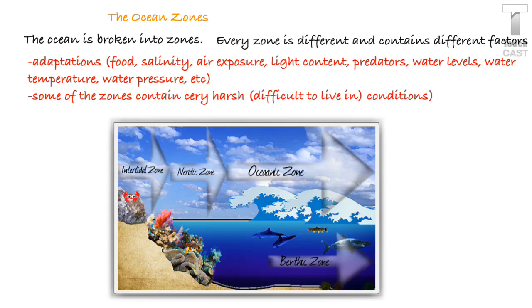Alright guys, so let's get down to business, because like I said, we've got a lot to write. We're going to start out talking about the ocean zones. The ocean is broken down into different zones, and each zone has its own different temperatures, its own different factors, its own different animals. Keep in mind these adaptations — some of these zones contain very harsh conditions, which are difficult, hard to live in.